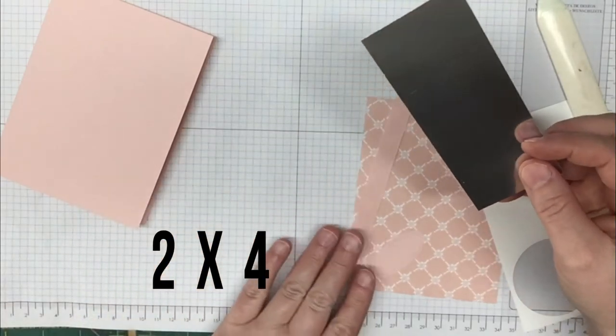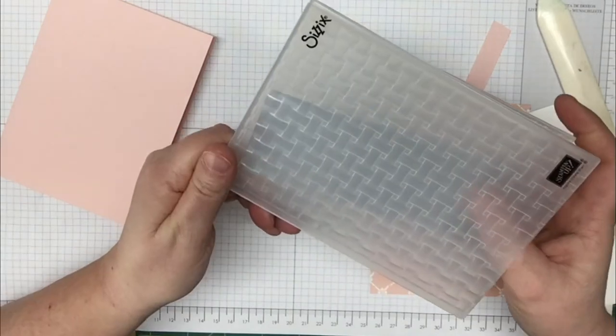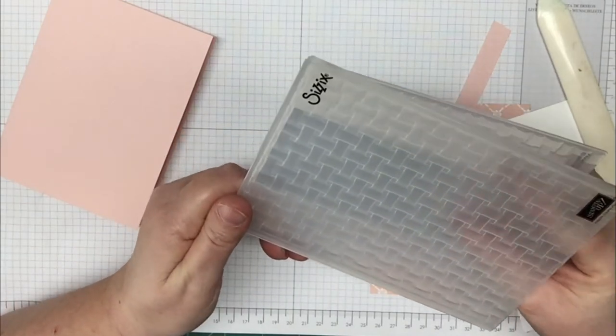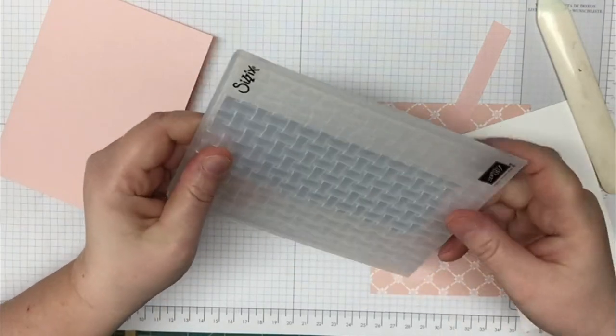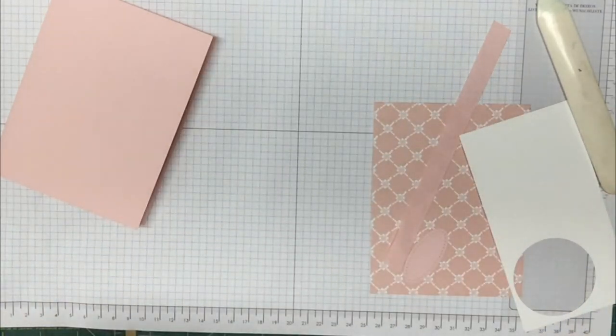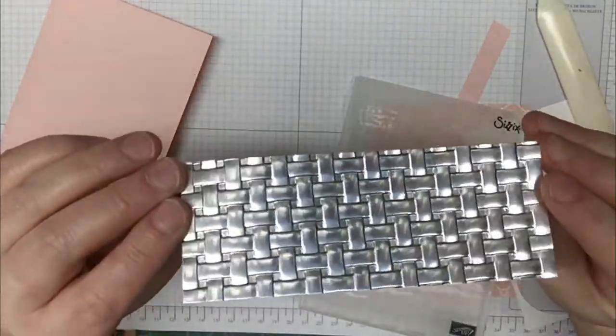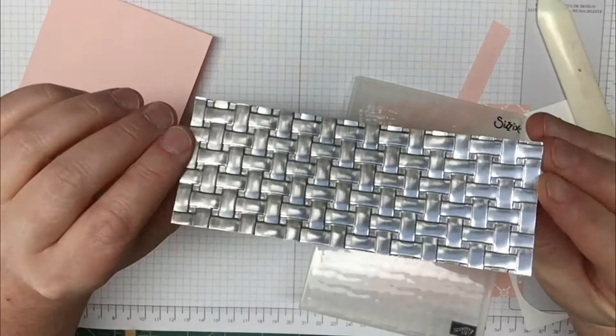We're going to run this through the Big Shot. You're going to need your basket weave folder. If you haven't run the foil paper through this folder yet, you have to. It is amazing. Look at how awesome that is. I love this folder.